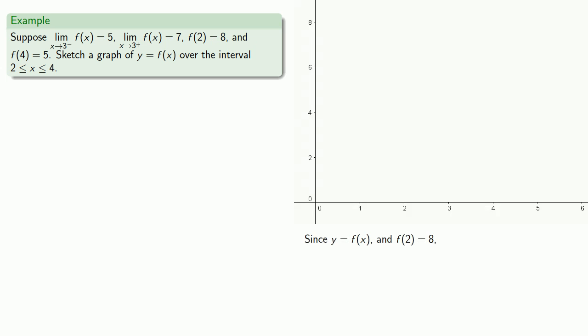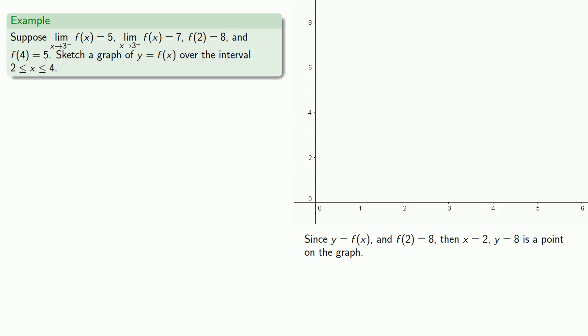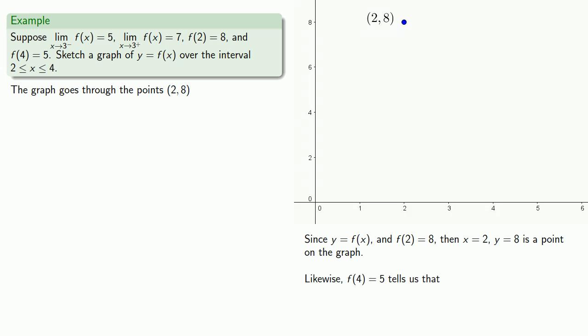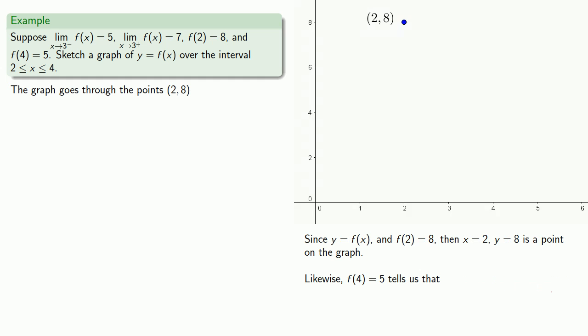f of 2 is equal to 8, and this tells us that if x equals 2, y equals 8, so the graph goes through the point (2, 8). We have another function value: f of 4 equals 5, which tells us that x equals 4, y equals 5 is a point on the graph, and so the graph also goes through that point.